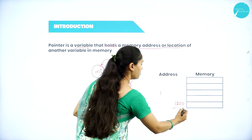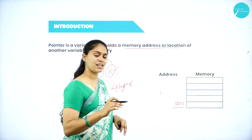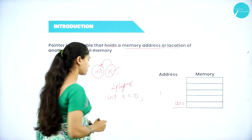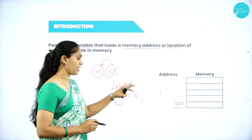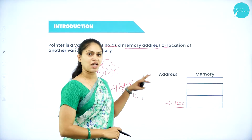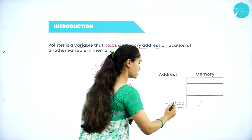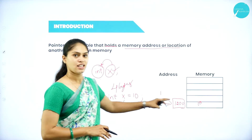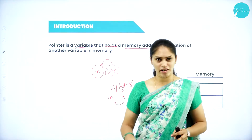Consider 1200 as the memory address — it is just a random imaginary number for illustration. The address will always be randomly generated by the system, not by the user or programmer. The address of x is 1200 and the value is 10. It should not always be 1200. This is how you declare a variable and how memory will be allocated. Now let's see what a pointer is.